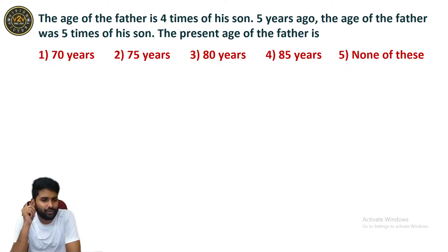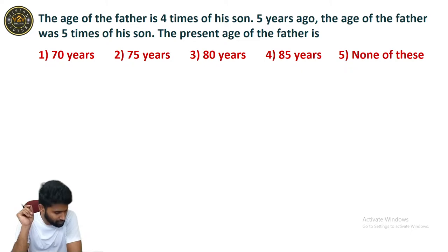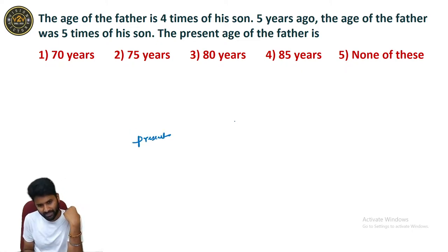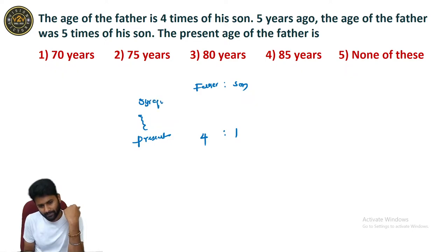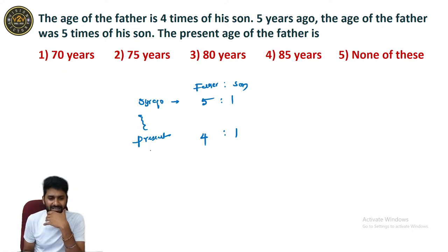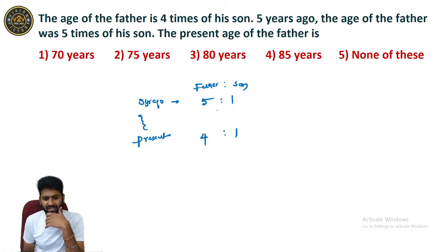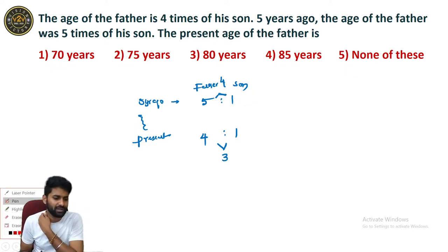See this information: the father's age is 4 times his son's, and 5 years ago the father was 5 times his son's age. What is the present age of the father and son? The present age ratio of father to son is 4 to 1. Five years ago, the ratio of father to son was 5 to 1. Now, observing the difference: the present ratio difference is 3 units and the past ratio difference is 4 units. We have to equate the opposite differences.